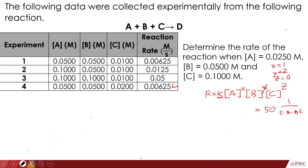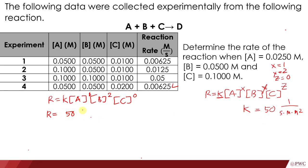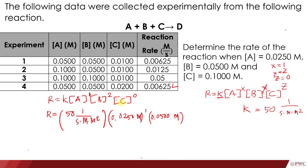Now we use the rate law. The rate equals k times the concentration of A to the power of 1, times the concentration of B to the power of 2, times the concentration of C to the power of 0. The constant k is 50 with units 1 over seconds times molar squared. The concentration of A is 0.0250 molar to the power of 1, the concentration of B is 0.0500 molar to the power of 2, and the concentration of C is 0.1000 molar to the power of 0.